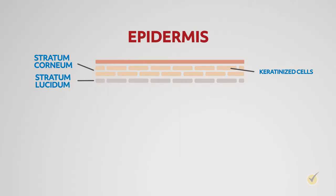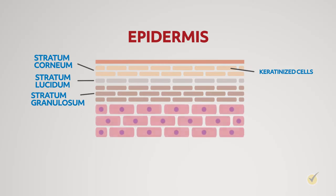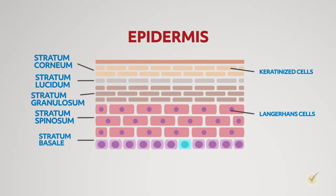Underneath the stratum lucidum in the palms and soles, and directly under the stratum corneum in all other areas of the skin, is the stratum granulosum. The stratum spinosum underlies the stratum granulosum, and also contains Langerhans cells, which break down foreign particles in damaged cells. The most internal layer of the epidermis is the stratum basale, which is made up of basal cells that divide to produce keratinocytes and push other cell layers towards the top.